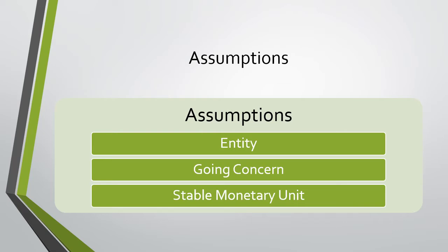The going concern assumption means that as investors and stockholders invest in these companies, they can safely assume that the company will be in business for at least 12 months going forward. It is the assumption that they are not going to close down.